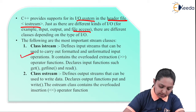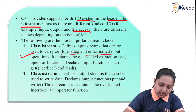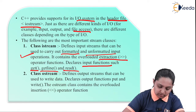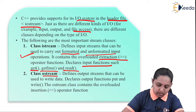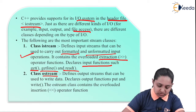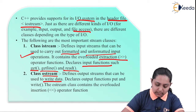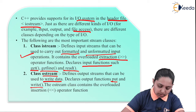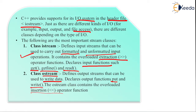The first class is istream, which defines the input streams that can be used to carry out formatted and unformatted input operations. It contains the extraction operator function as well as input functions such as get, getline, and read. The next class is ostream, which defines the output stream used to write data. It declares output functions put and write, and contains the overloaded insertion operator function. Use istream to receive data via the extraction operator, and ostream to output the extracted data.